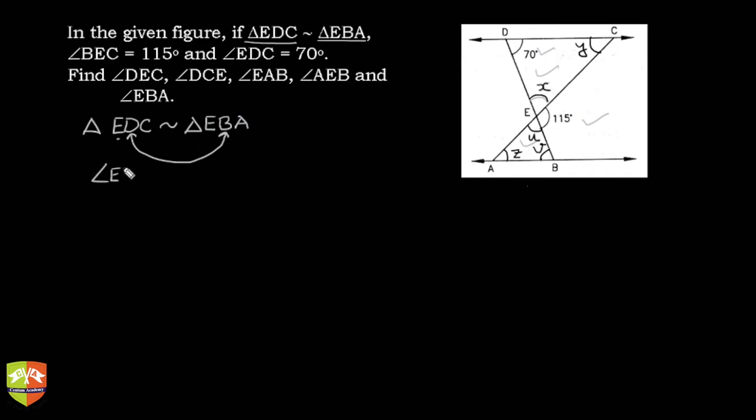Hence angle EDC is going to be equal to angle EBA. Angle EDC in the figure is 70 degrees, so angle EBA is 70 degrees. Hence we get angle V is equal to 70 degrees. First one done.